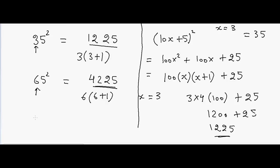Another example: 85 squared. That will be 25 at the end, and then 8 into 9 equals 72, so the answer is 7225. This is how the trick works — I hope this helps, I'll see you in the next trick.